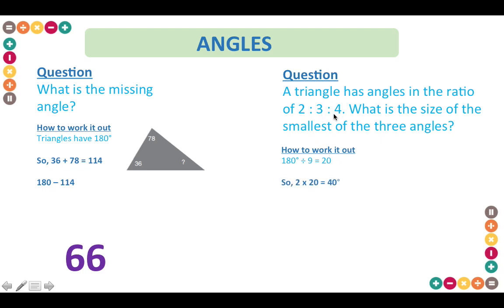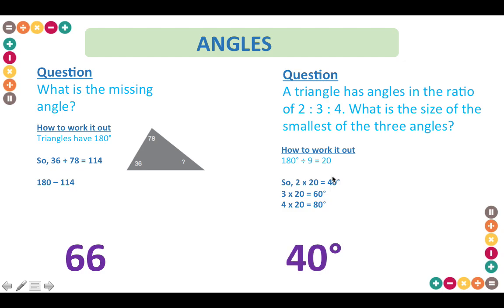Now multiply 20 by each of the ratios: 20 times 2 is 40, 20 times 3 is 60, and 20 times 4 is 80. So the three angles are 40 degrees, 60 degrees and 80 degrees. The question asks for the smallest of the three angles, so the answer is 40 degrees.